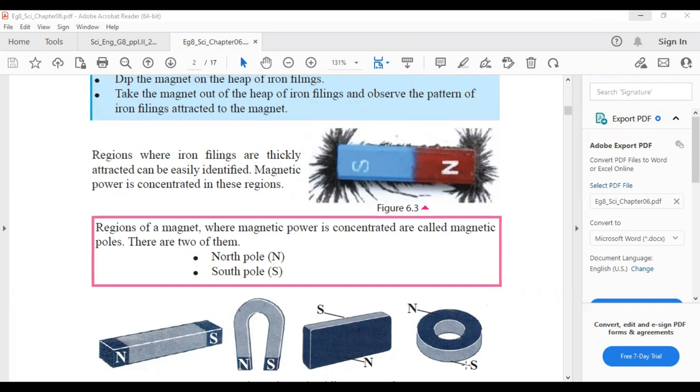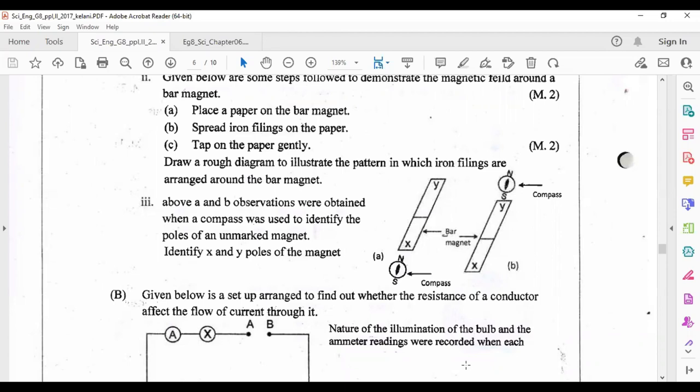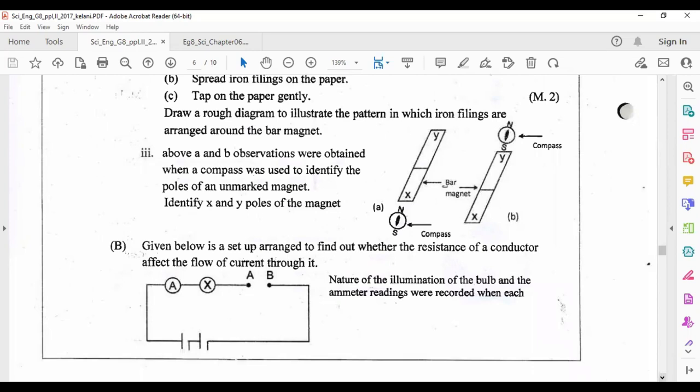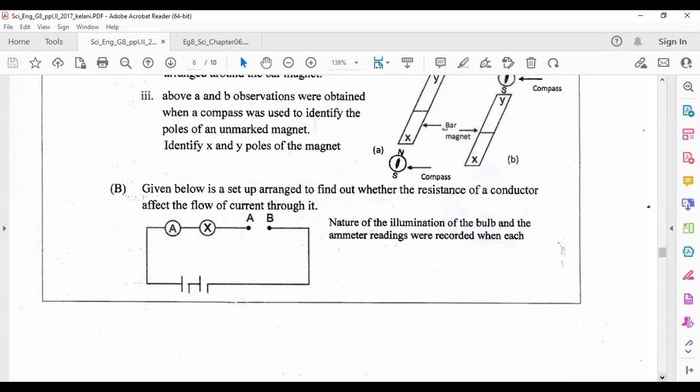Above A and B, observations were obtained when a compass was used to identify the poles of an unmarked magnet. Identify X and Y poles of the magnet. Near the X pole, the X pole is the south and the Y pole is the north.